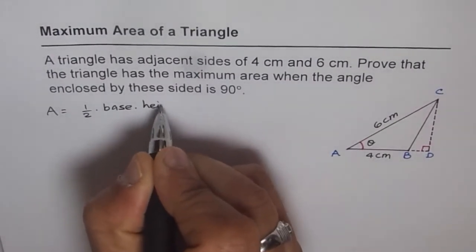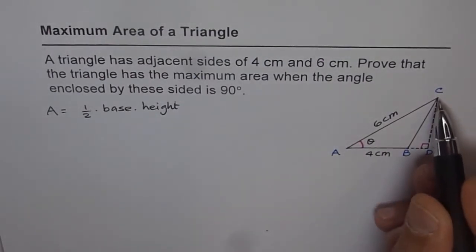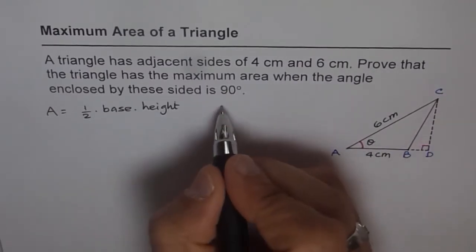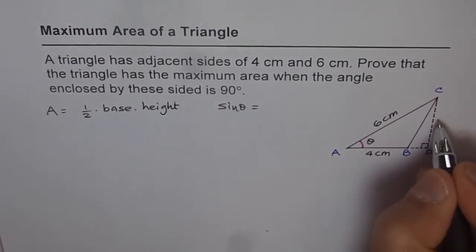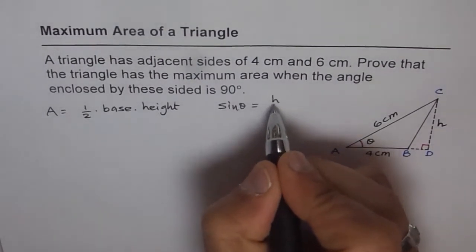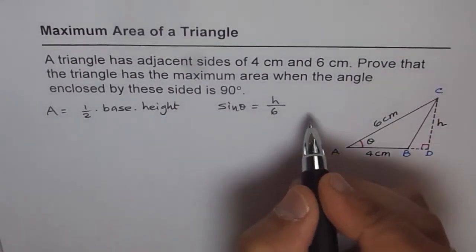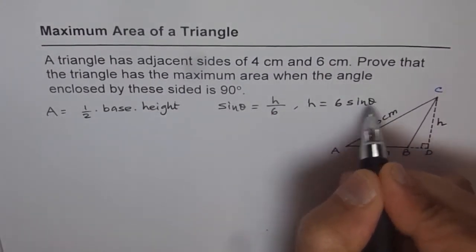Base times height. Now in this question we are given the base which is 4 and what is the height? Height is we dropped a perpendicular and height is CD. Now how can you relate height over the given situation? So we can write sin theta is equal to height which is CD. Let me write this as h over hypotenuse which is 6. So from here we can write height equals to 6 times sin theta. So that gives us height also.